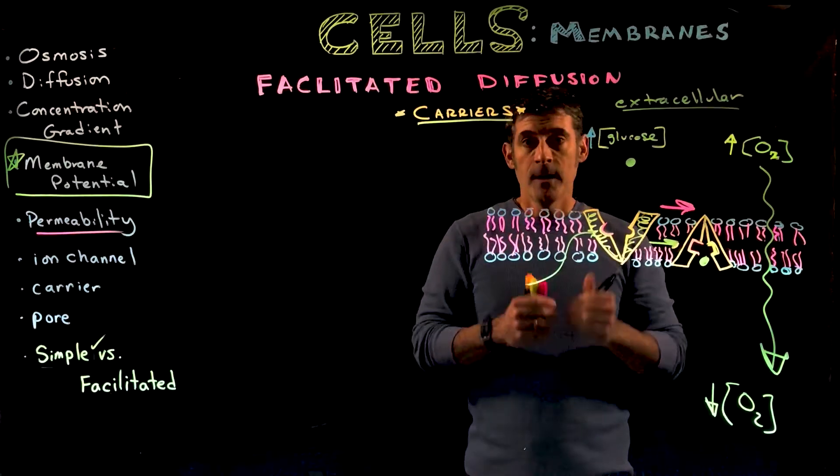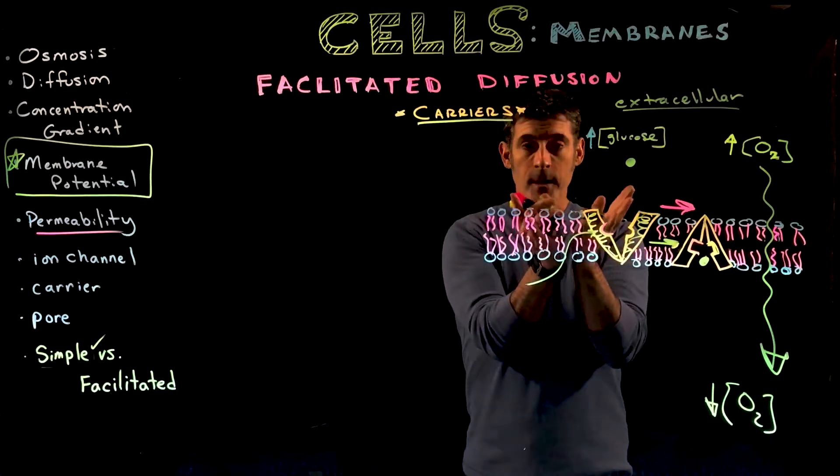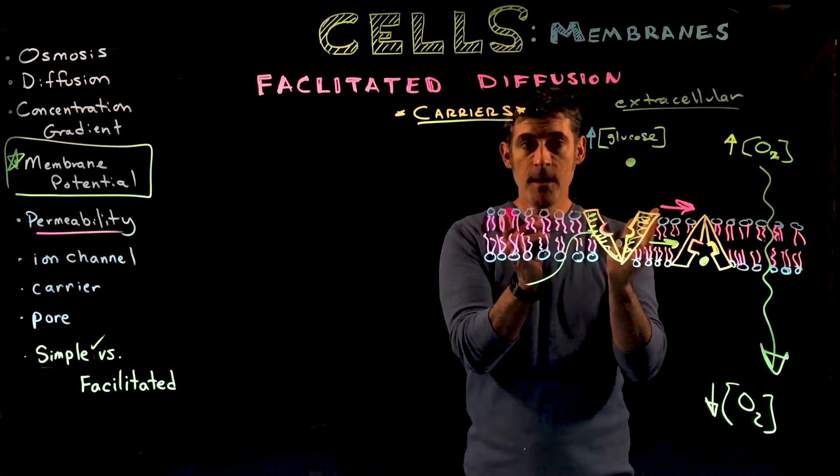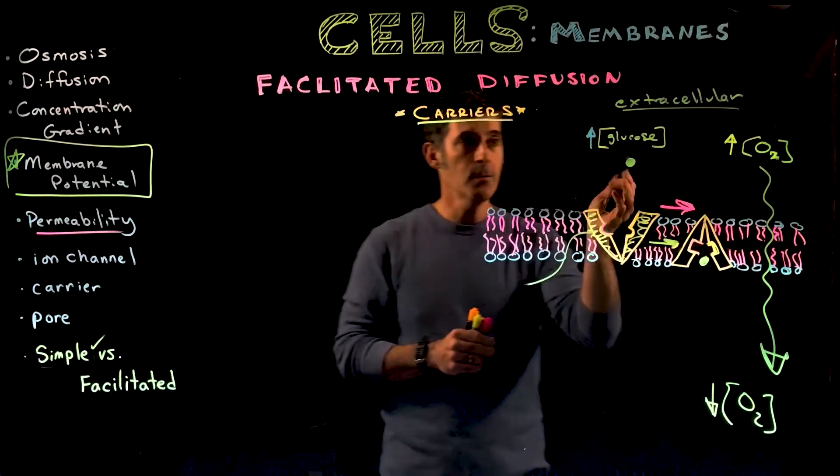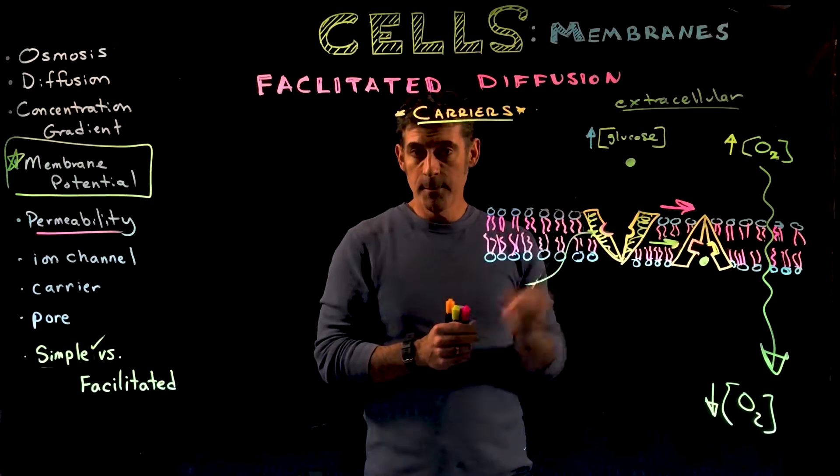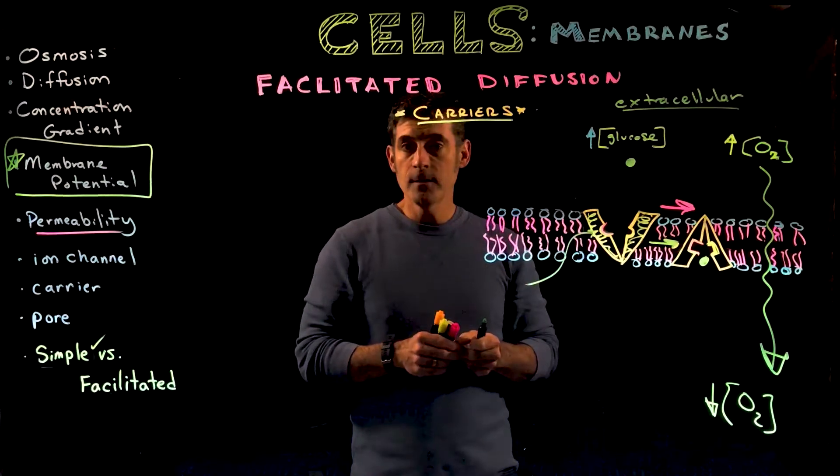Now we're going to look at something different: carriers. A carrier is another type of transmembrane protein, but the entire carrier changes shape to allow the diffusion process to occur. Carriers are for molecules that are typically larger and polar. The example here is glucose.